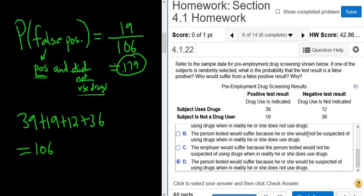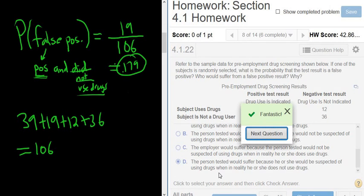You have to be careful. This one said not be, not be suspected. It's be suspected. So it's D. So be really careful with these follow-up questions. And that's it.